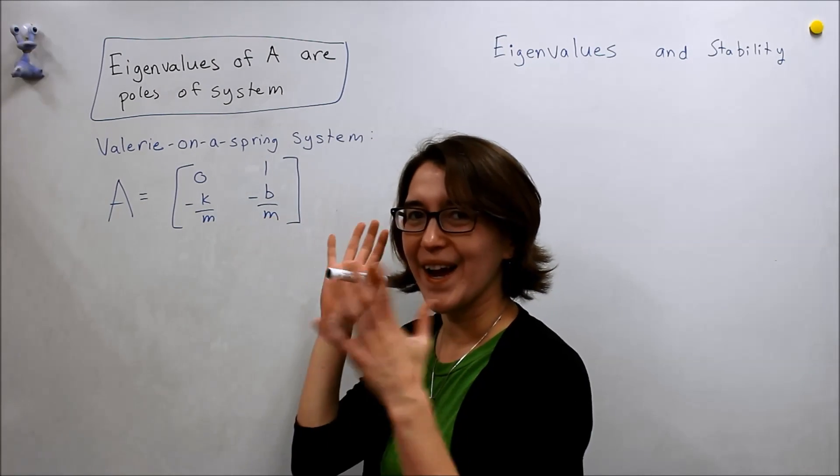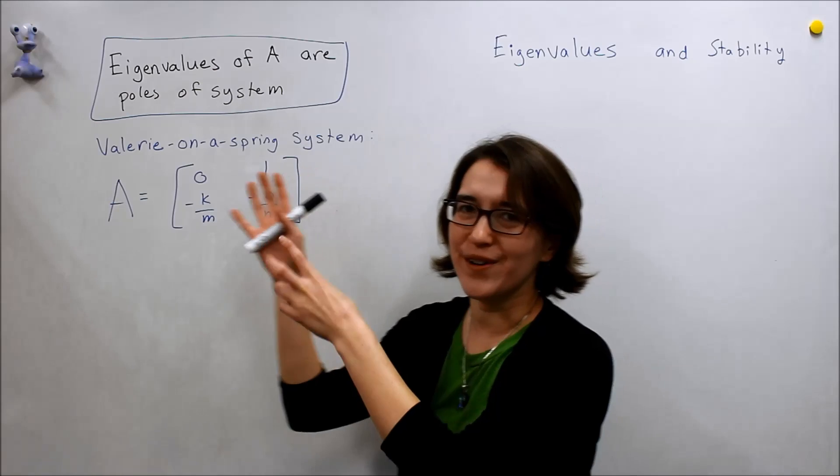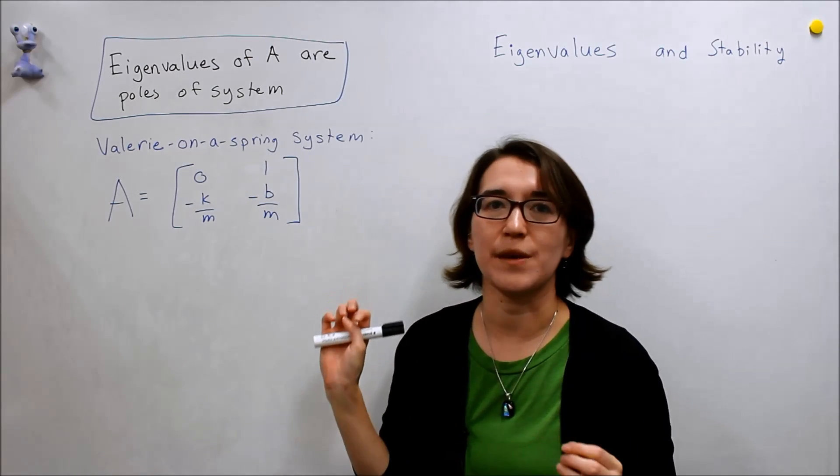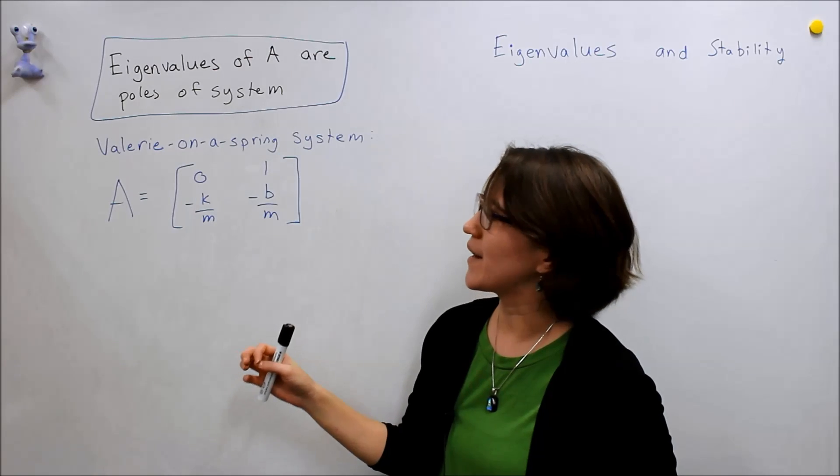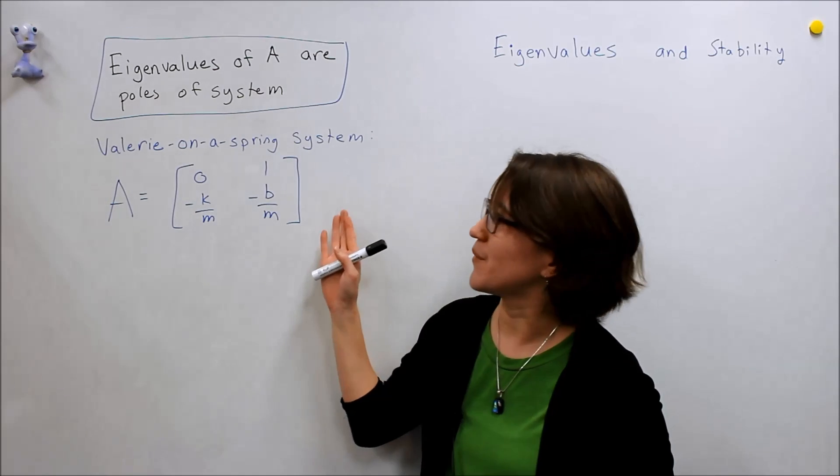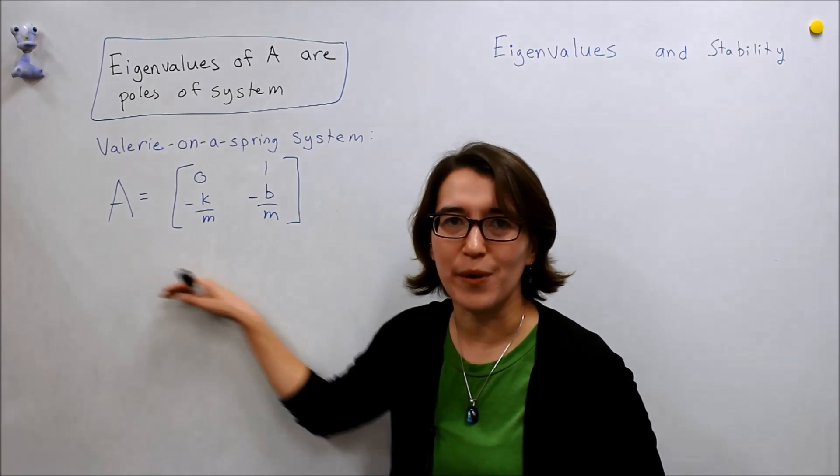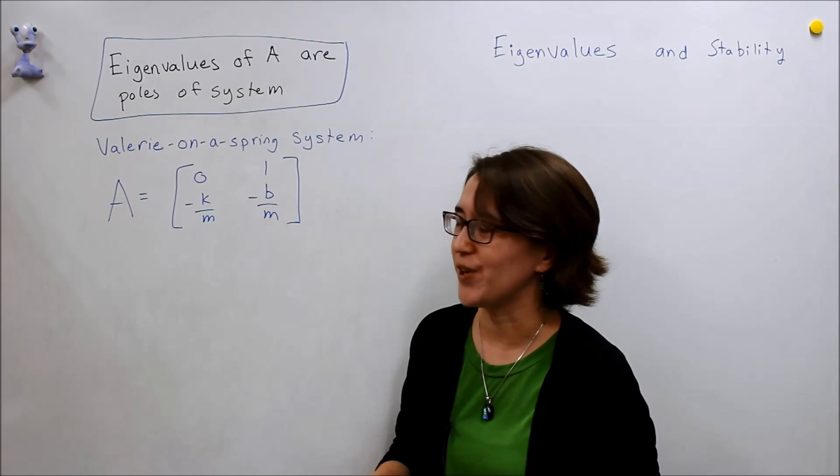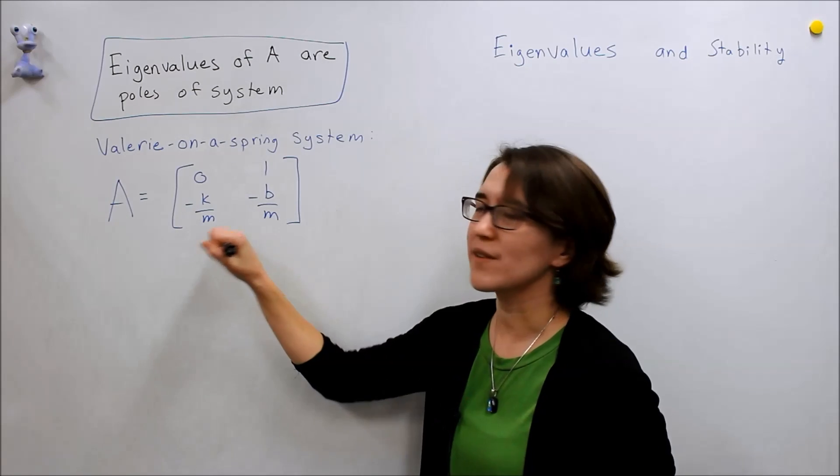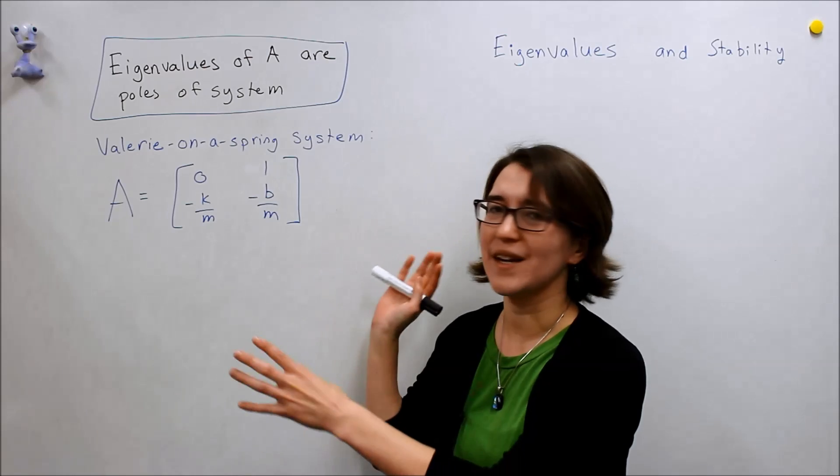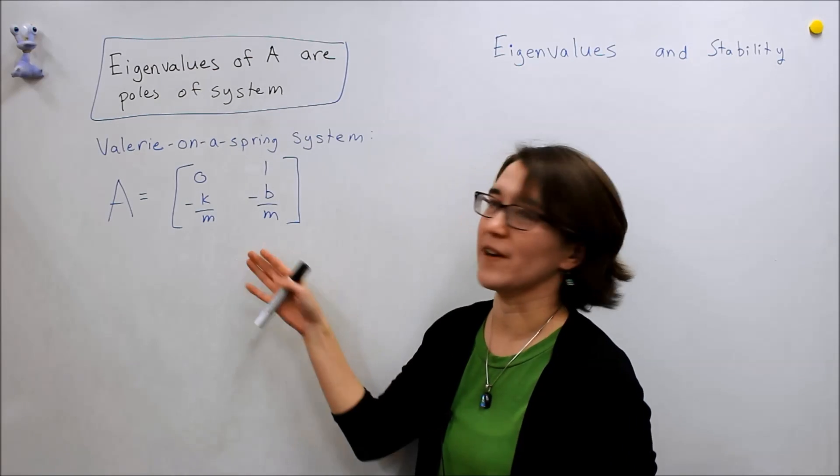So now we're going to apply our newfound fact that eigenvalues of A are equivalent to the poles of the system and look at my favorite system, the Valerie-on-a-spring system. If you don't remember the modeling for this you can go back to an earlier video to see that. So here's the A matrix and the beauty is that we just need the A matrix. We don't need B, C, or D to figure out the stability.